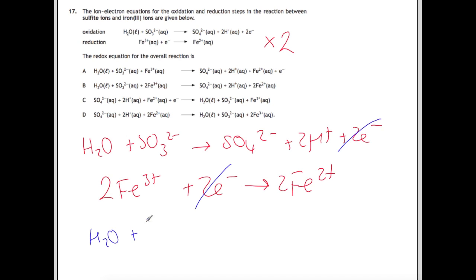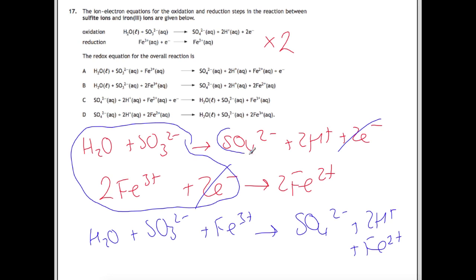Now you just combine what is left over. We have H2O plus SO3 2- plus 2Fe3+ to give us SO4 2- plus 2H+ plus 2Fe2+. Purely just taking everything that is on the left hand side of the arrow and joining it together, and everything that was on the right hand side of the arrows, joining that together. If we now have a look at our answers, we'll find that our answer for this is B.